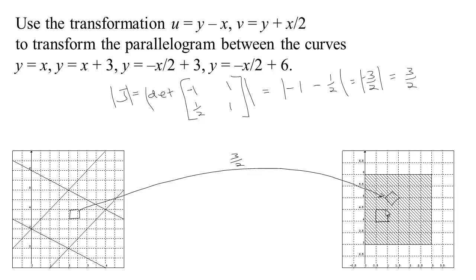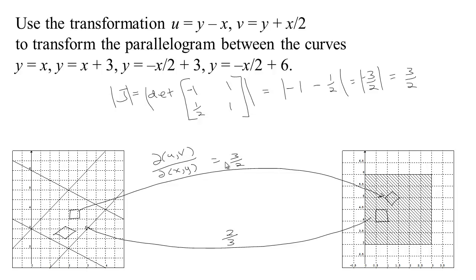On the other hand, if you had a region here, that would become some region back the other way. If everything gets stretched by 3 halves going over, everything should get smashed by 1 over 3 halves, which is 2 thirds. So the Jacobian d(uv)/d(xy) is 3 halves, and the one that compares changes in x-y space to changes in u-v space is going to be 2 thirds. When moving from x-y to u-v, we have u and v on top and x-y on the bottom. When going from u-v to x-y, we have x and y on top and u and v on the bottom.